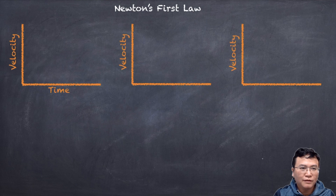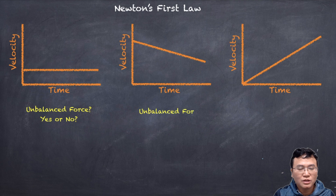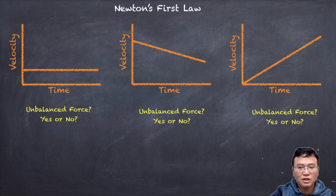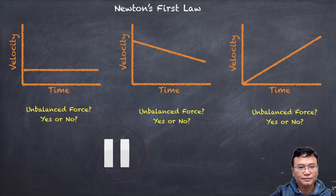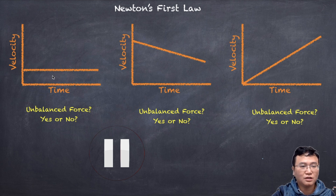We have a velocity-versus-time graph showing three different situations. Your job is to determine whether the force is balanced or unbalanced. For the first one, you can see that the velocity is constant — it is not changing, so the acceleration is zero. If the acceleration is zero, then the force acting on the object is also zero, so this would be balanced.